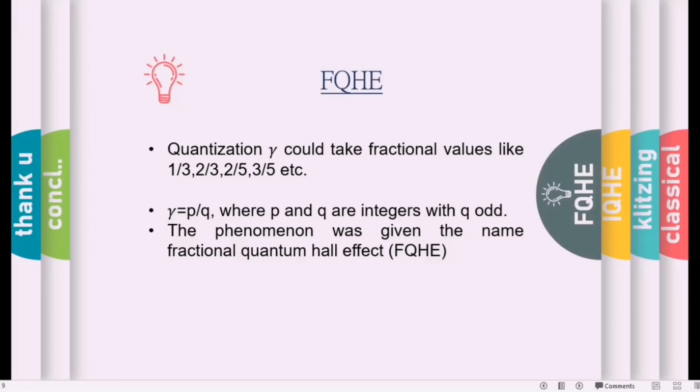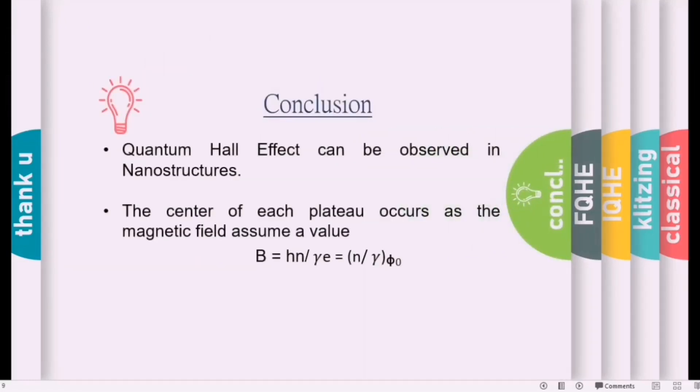The first experiments exploring the quantum Hall effect were performed in 1980 by von Klitzing, approximately 100 years after Edwin Hall discovered the classical Hall effect. So we can conclude the session.